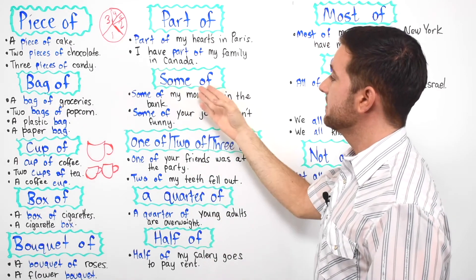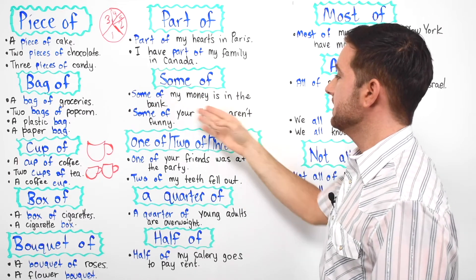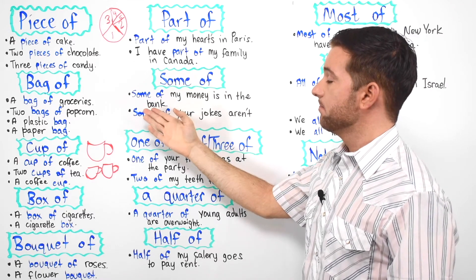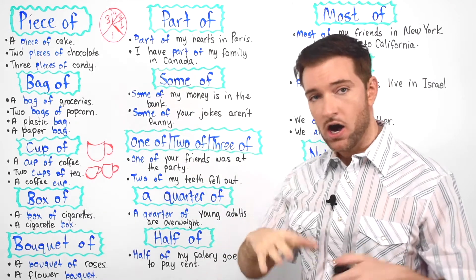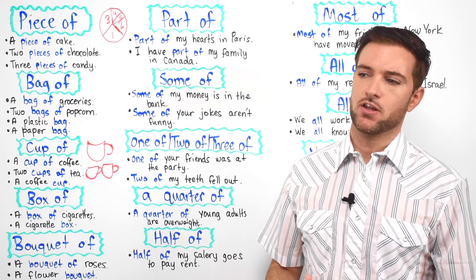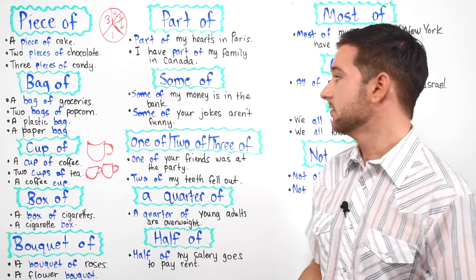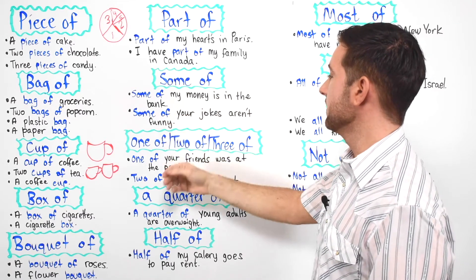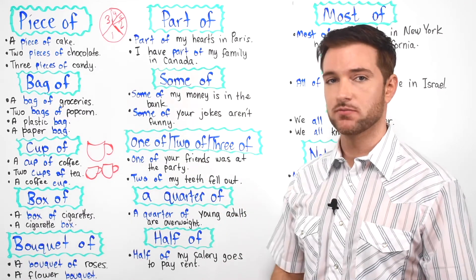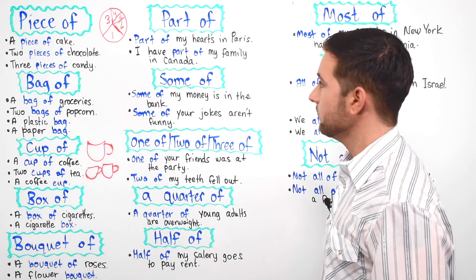We have "some of" — some of my money is in the bank. Again, we're talking about not all of it, just some of it. Maybe 30% or 40% of it. Some of my money is in the bank. Some of your jokes aren't funny — so not all your jokes are funny.